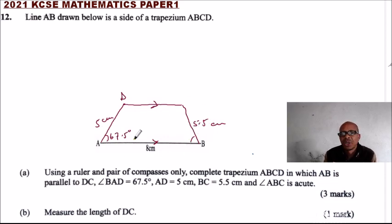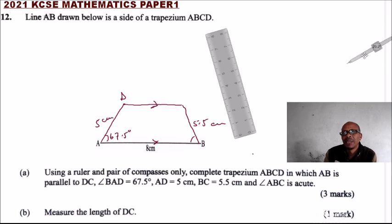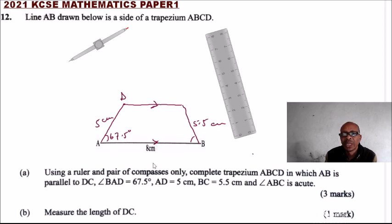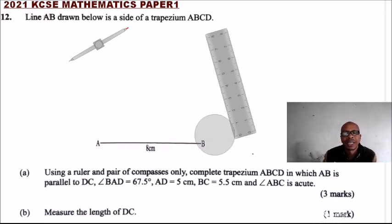That is the information given, and we are supposed to use a ruler and a pair of compasses. You must follow those instructions and not use any other instrument, because what is being tested is whether you can make measurements — for example AD and BC — and whether you can construct an angle of 67.5 degrees using only these two instruments.